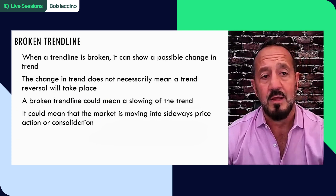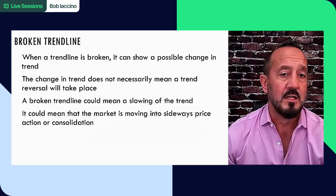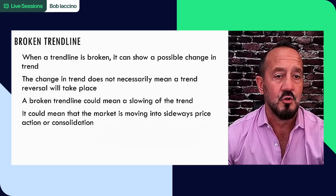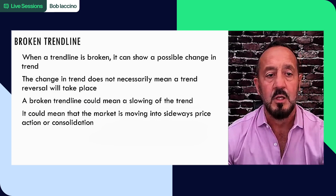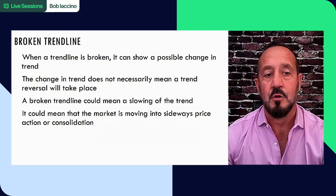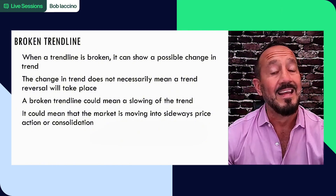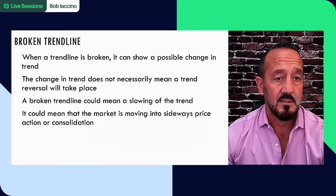You may see steep trend lines flatten as the swing highs and swing lows change from very and extremely to moderate and slightly bullish and bearish conditions. This is structurally true and this is what we talk about in traditional trend lines. Now, broken trend line - when a trend line is broken, it could show a possible change in trend, not a guaranteed change in trend.